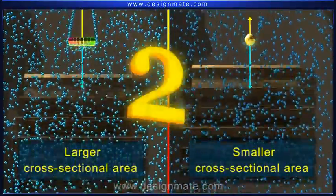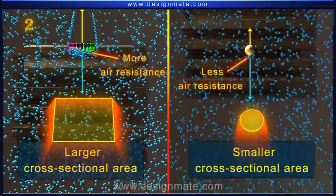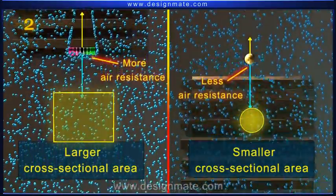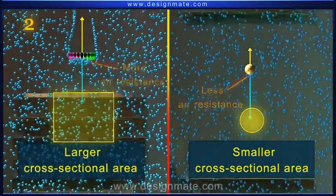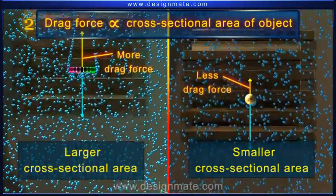Larger the cross-sectional area exposed to air, more will be the air resistance experienced by it. So, the drag force acting on an object varies directly with the cross-sectional area of the object.